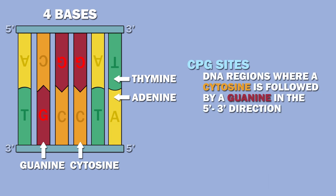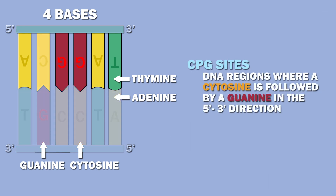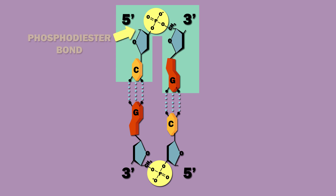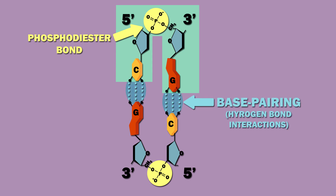CpG sites are DNA regions where a cytosine is followed by a guanine in the 5' to 3' direction. Note that a CpG refers to a cytosine connected to a guanine by a phosphodiester bond, as shown here — it is not a cytosine base paired with a guanine, as shown here.